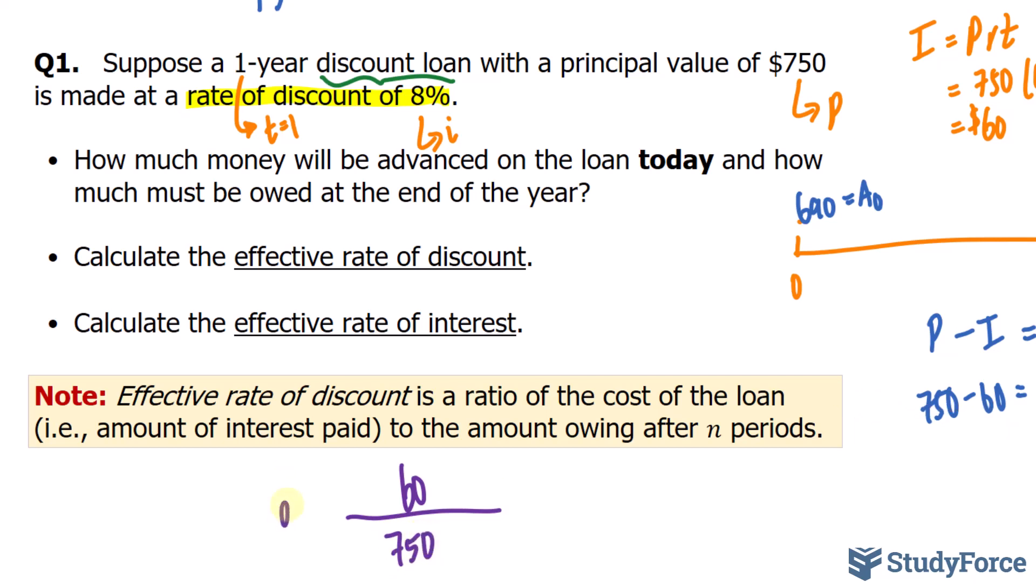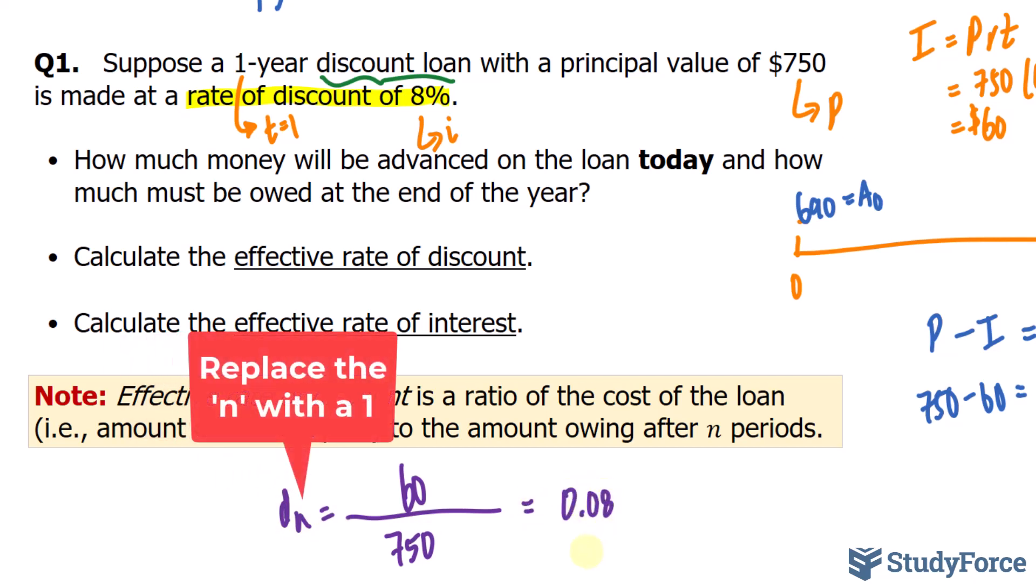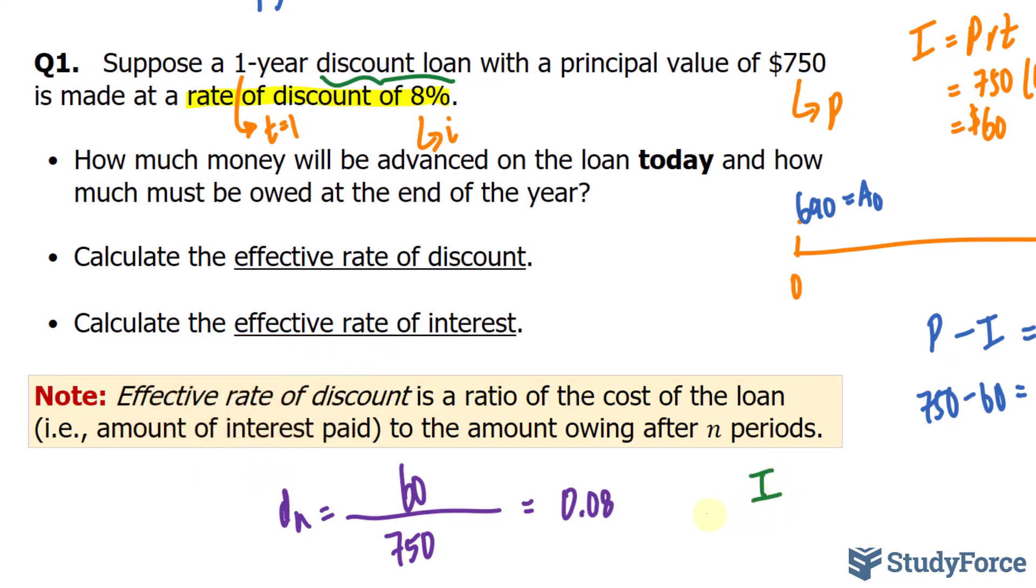We'll call this value D sub N. And if you calculate this out, you'll end up with 0.08, which is exactly what was stated in the question. To generalize this formula, it is simply the interest that you're expected to pay up front, divided by A sub N.